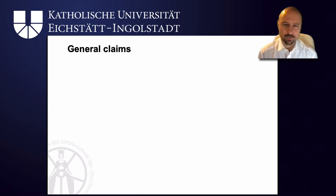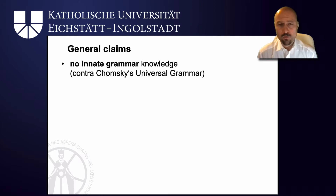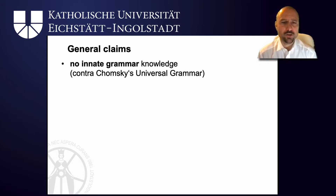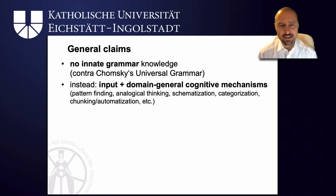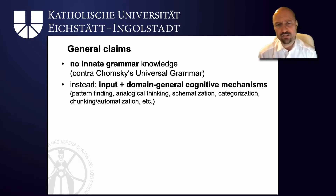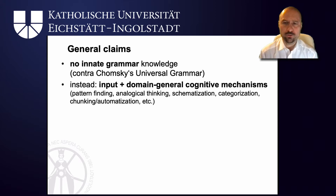So what are the general claims of usage-based construction grammar? Well, usage-based construction grammar assumes that there is no innate grammar knowledge, no domain-specific knowledge that you need to acquire a language. This is in stark contrast to Chomsky's universal grammar. Instead, input as well as domain-general cognitive mechanisms such as pattern finding, analogical thinking, schematisation, categorisation, or chunking are considered to play a huge role.